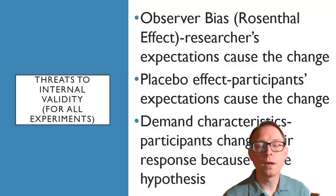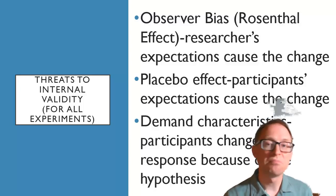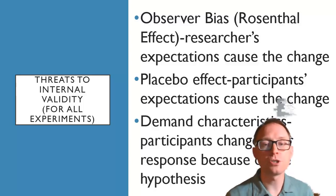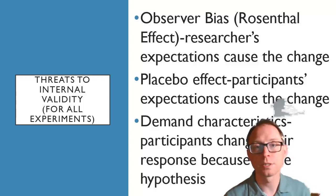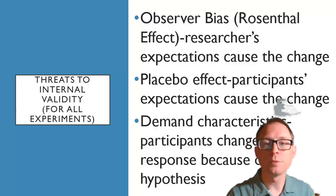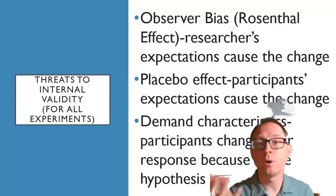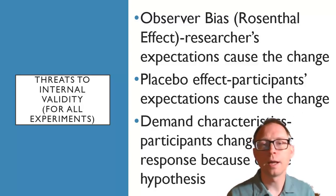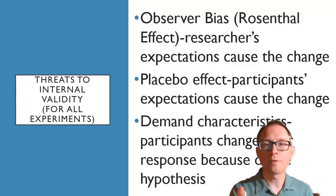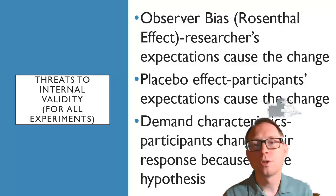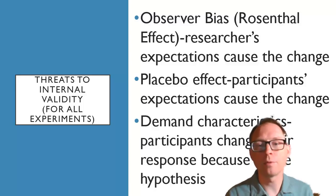The way you get rid of these problems is pretty simple. When you're double blind, you eliminate these issues. If the researcher doesn't know what condition you're in, they can't have observer bias. If the participant doesn't know what condition they're in, they won't have demand characteristics. For the placebo effect, generally you have a placebo group where everybody does something — you just vary the form of the treatment. So everybody thinks they're in a treatment group, but only one group is in the actual treatment you care about. That takes care of the placebo effect.